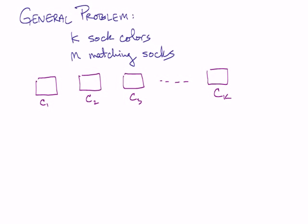The general problem is this. You have K different sock colors and you want M matching socks. So I have my pigeonholes. I'm labeling them C one up to C K. And then to get my M matching socks, I put M minus one in each box. So that gives me K times M minus one. And if I have one more, that'll push one of the boxes over the edge. That's how many socks I need.